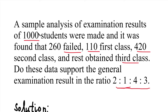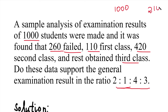Out of 1000 students, 260 students failed, 110 students got first class, 420 students got second class, and the rest obtained third class. So in the three known categories: 260 failed, 110 first class, and 420 second class. Therefore, third class students = 1000 minus (260+110+420) = 210 students.